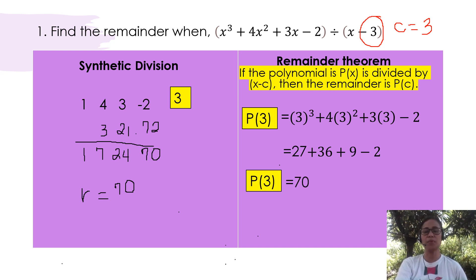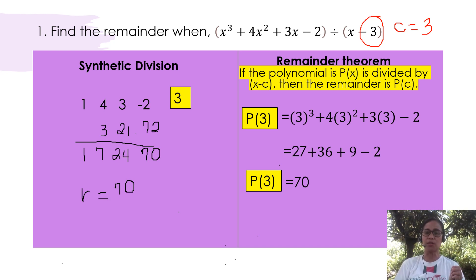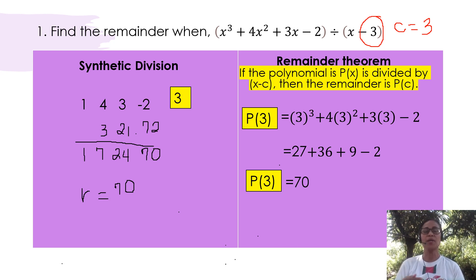Therefore, P of 3 has the value of 70, which is simply the value of the remainder. At this point, you might be thinking that synthetic division is easier to use in obtaining the remainder than using the remainder theorem because the numbers are getting bigger and bigger. But in my second example, you are going to realize that it is actually a case-to-case basis. Now let's move on to our second example.